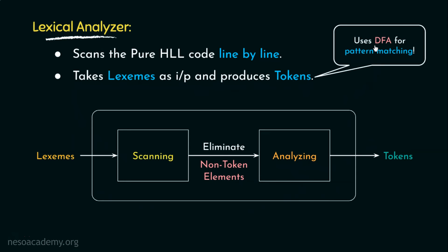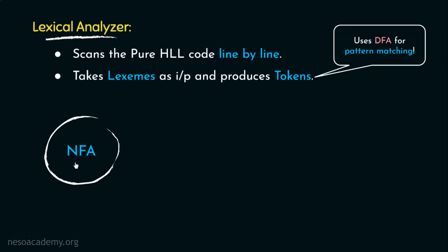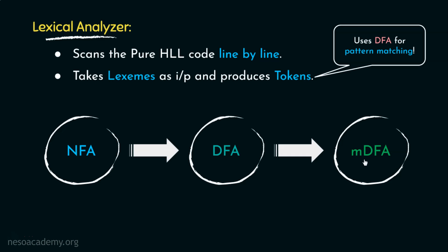The lexical analyzer takes lexemes as input and produces tokens, making use of the DFA for pattern matching. To understand how to construct DFAs, learners need the concepts of NFA, the procedure for converting NFA to DFA, and finally minimization of DFA to the minimized DFA (MDFA). All of these can be learned from the Theory of Computation course, and I strongly recommend going to that playlist to learn these topics.